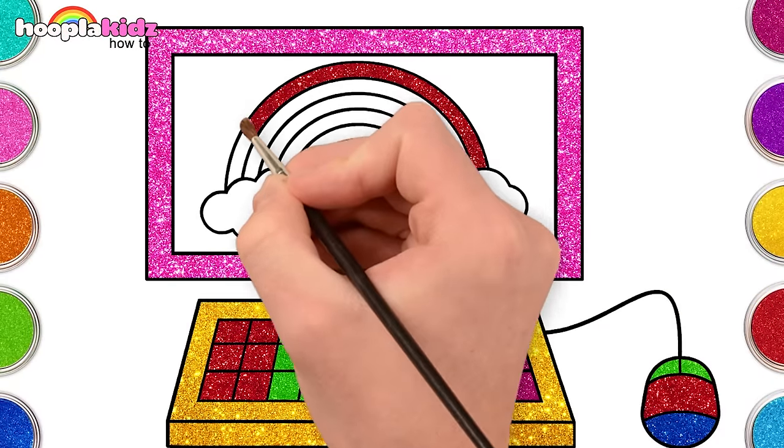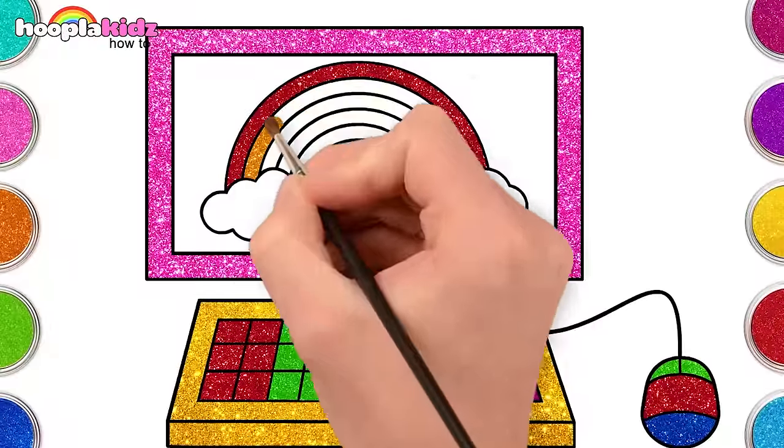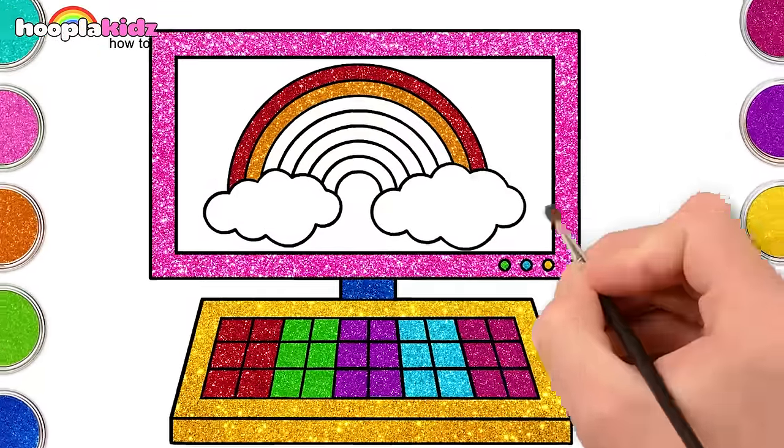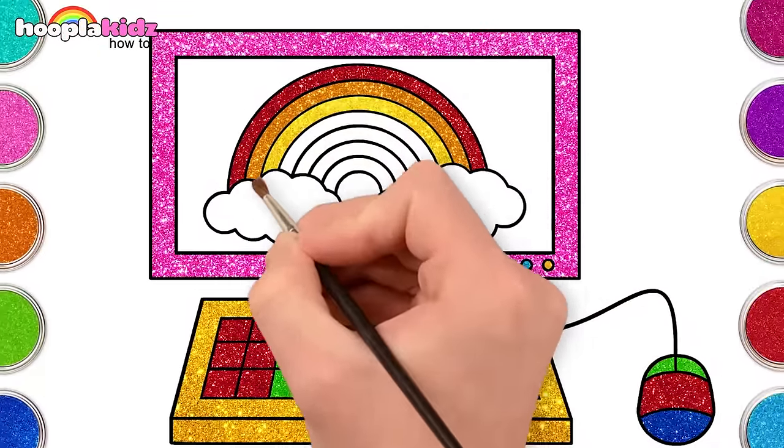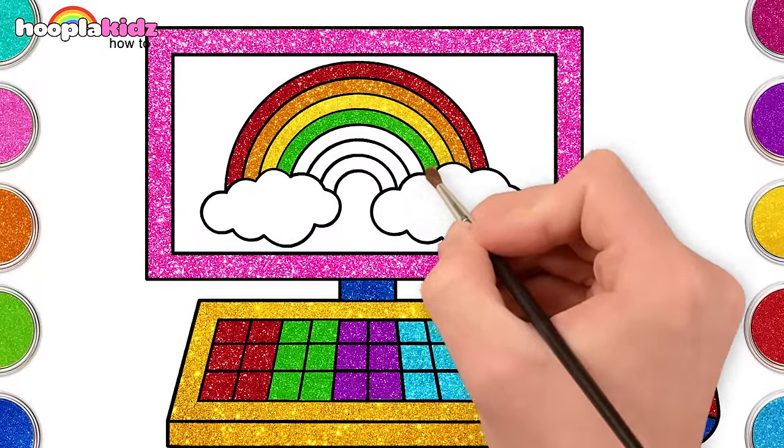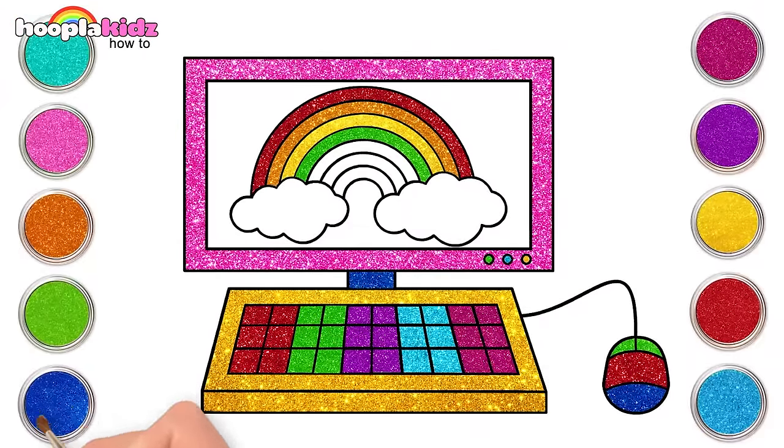Starting with red, then orange. Red and yellow and pink and green, purple and orange and blue. I can sing a rainbow, sing a rainbow, sing a rainbow too.